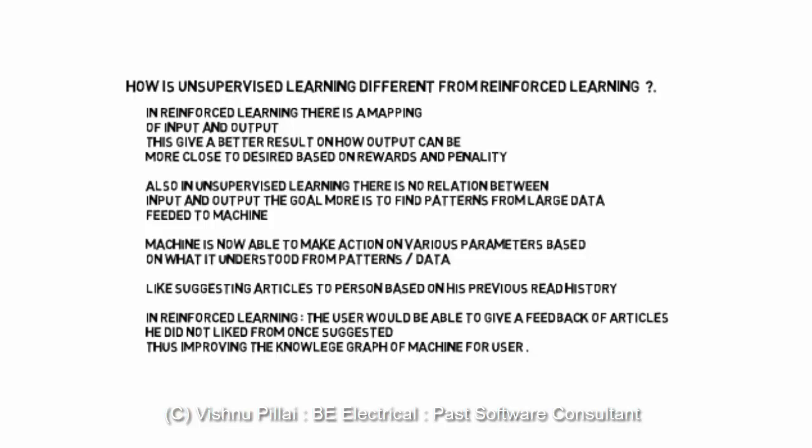Machine is now able to make action on various parameters based on what it understood from the patterns or data like suggesting articles to a person based on his previous read history. In reinforced learning the user would be able to give feedback on articles he did not like from ones suggested, thus improving the knowledge graph of the machine for the user.